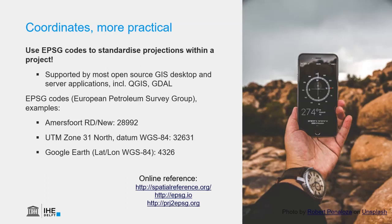Then you can use these different websites. With spatialreference.org you can search with keywords of the projection in the EPSG catalog. With the second website, epsg.io, you can look up a country or a region and see which EPSG codes are most often used in that area. If you already have a file, like a shapefile with a PRJ file, you can upload it to PRJ2EPSG.org and it will return the EPSG code.